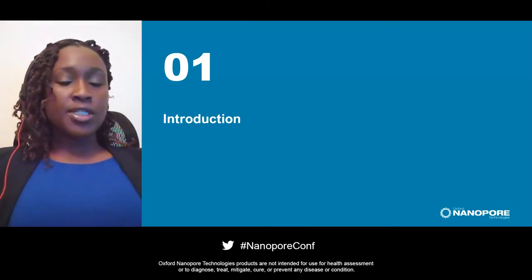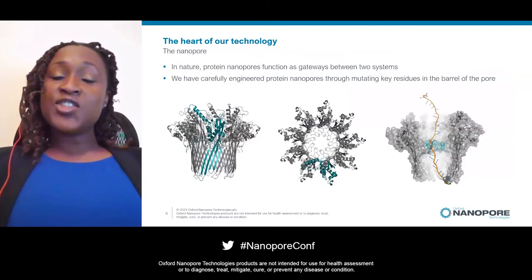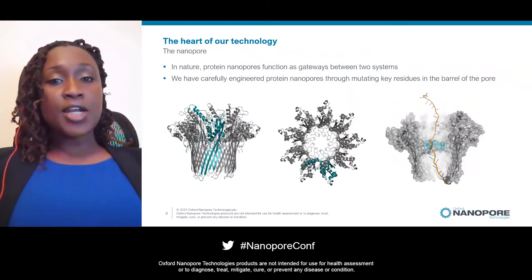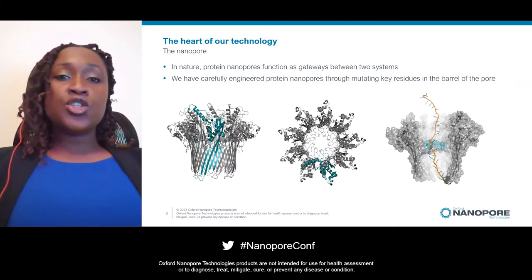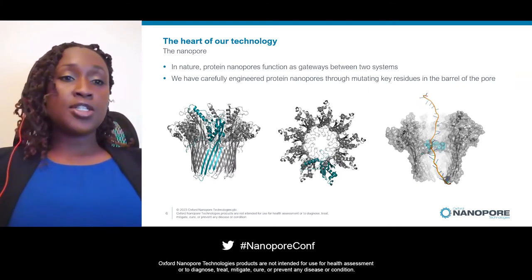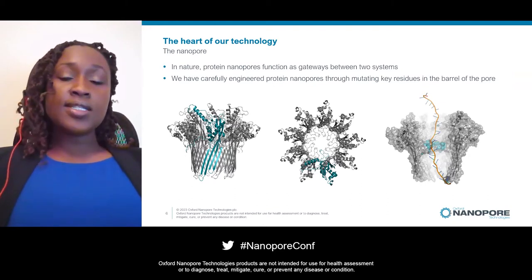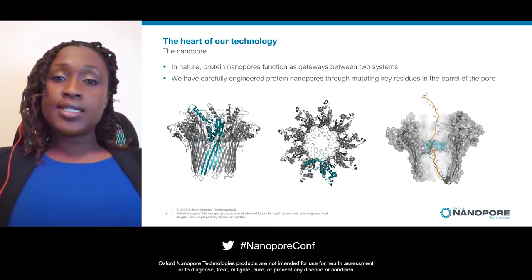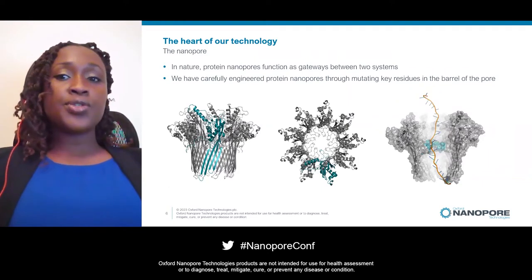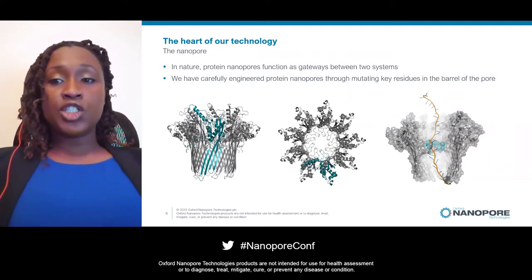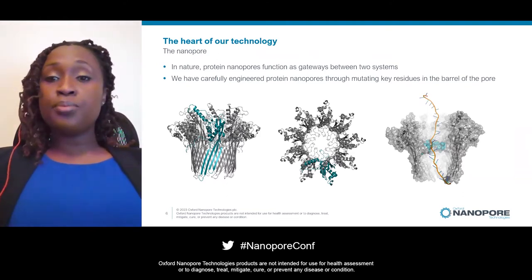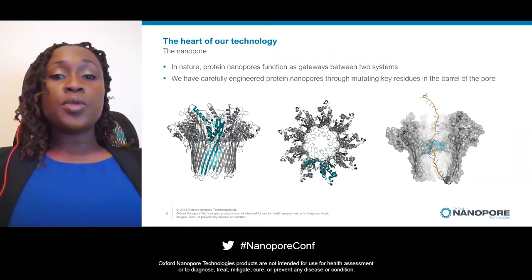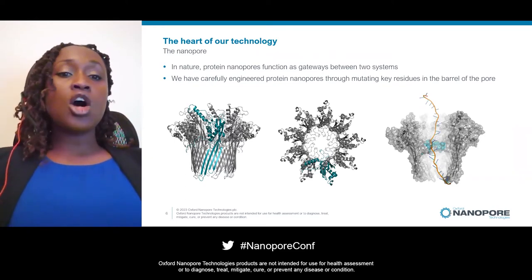Let's begin with how Nanopore sequencing works. As you might already know, at the heart of our technology lies the Nanopore. A Nanopore is essentially a very small hole that functions as a gateway between two systems, facilitating the transport of molecules from one side of the membrane to the other. In our system, we use protein Nanopores. Nanopores inherently have different shapes and properties, which can be enhanced through clever mutagenesis. We have selected the pores with the best features for sequencing on our platform.